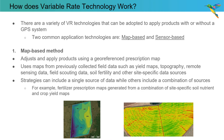We can use maps from previously collected field data sources such as yield maps, topography, remote sensing data, soil fertility data or other site-specific data sources. The strategy to develop a map-based or prescription map can include using a single source of data, while others include a combination of sources. For example, fertilizer prescription maps are typically generated from a combination of site-specific data sources like soil nutrient or crop yield maps.